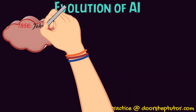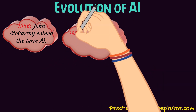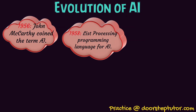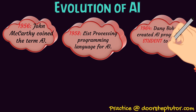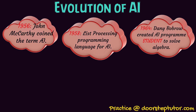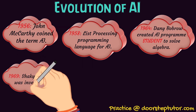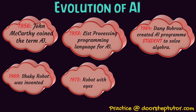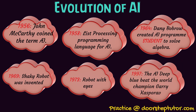Now let us talk about the evolution of AI. In 1956, John McCarthy coined the term 'artificial intelligence.' In 1958, he developed a program known as LISP, or the List Processing program, to support AI activities. In 1964, Danny Bobrow created an AI program called STUDENT to solve algebraic problems. In 1969, the Shakey robot was invented — the first robot — and a robot with eyes was invented in 1973. In 1997, Deep Blue AI beat world chess champion Garry Kasparov.